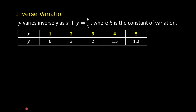Let us look at this table. The values of x are 1, 2, 3, 4, 5. The values of y are 6, 3, 2, 1.5, 1.2. Notice that if you multiply each value of x by the corresponding value of y, the product is always equal to 6.